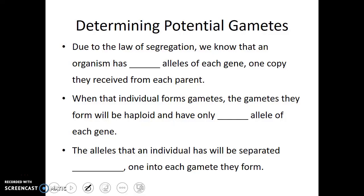Due to the law of segregation, we know that an organism has two alleles for each gene, one copy they received from each parent. When that individual forms gametes, when they make their sex cells, the gametes will be haploid and have only one allele for each gene. The alleles that an individual has will be separated evenly, one into each gamete they form.